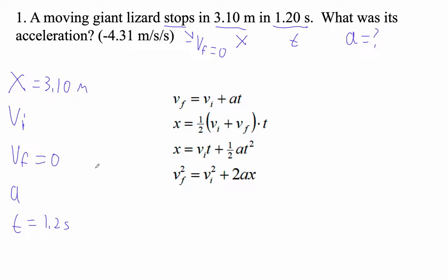Now, if I had my druthers, I would use a formula that didn't have Vi, but notice that all of these formulas have Vi in it. So this is that one case where you got to do two things. Two steps. So my first step is to find Vi and then I can find the acceleration.